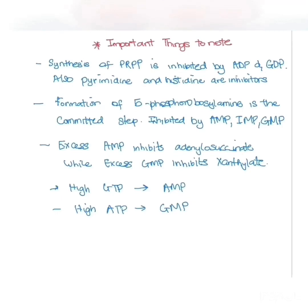If there is excess AMP and GMP, these will inhibit their precursors, which are adenylosuccinate and xanthylate. If there is a high level of GTP, this can cause the production of AMP, and if there is high ATP, this can cause the production of GMP.